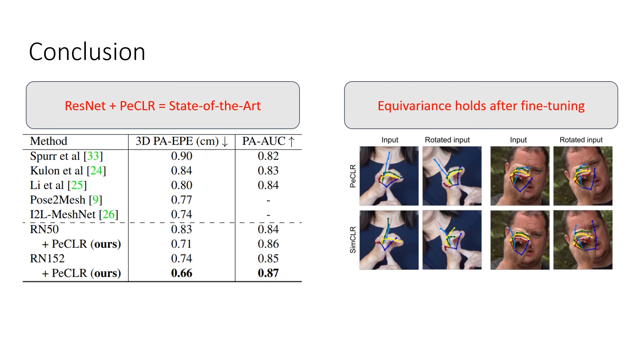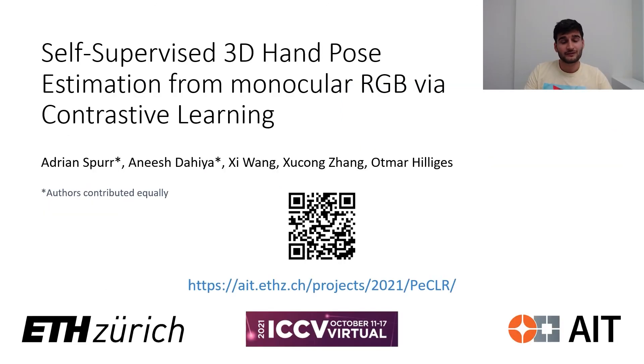Second, the equivariance property induced during pre-training holds after fine-tuning. This is exciting, as you could attempt to induce other properties such as smoothness across video frames or robustness to noise. For code, more results and information, we encourage you to check our software, paper and website. Thank you.